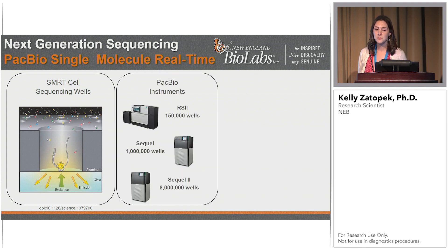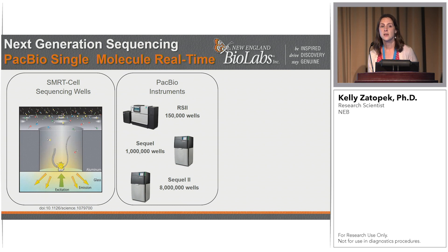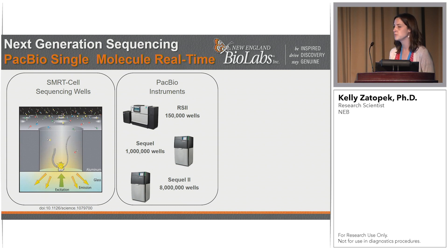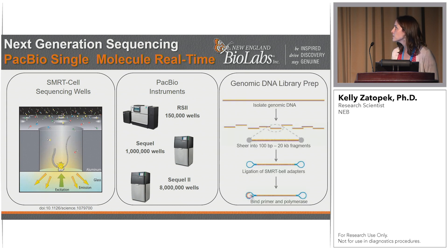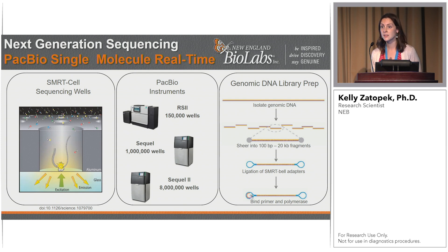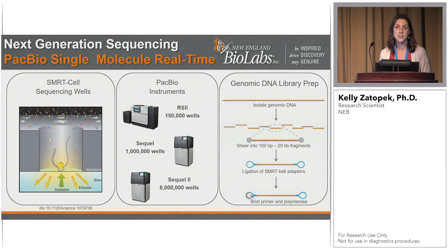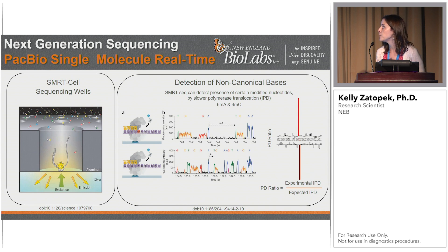We chose this platform for many reasons. At New England BioLabs, we have an RS2 and a Sequel available to us for basic research needs — about 15 research scientists use this, and we're responsible for creating our own libraries, sequencing our own runs, and doing all the data analysis. We also chose PacBio because of the library preparation scheme: PacBio is one of the only techniques that allows you to create a library without any amplification or enrichment steps. And thirdly, we chose PacBio because of its ability to detect non-canonical bases — currently it can detect 6-methyl-A and 4-methyl-C based upon a slowing down of the polymerase translocation during sequencing, which is called the interpulse duration.